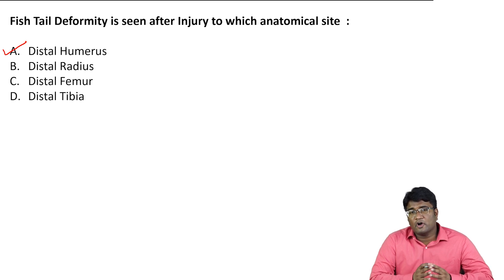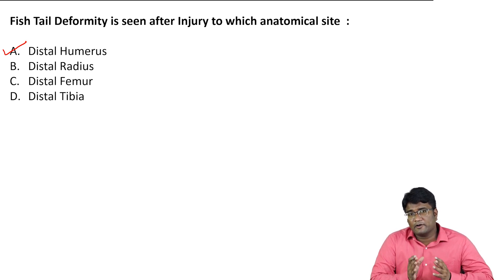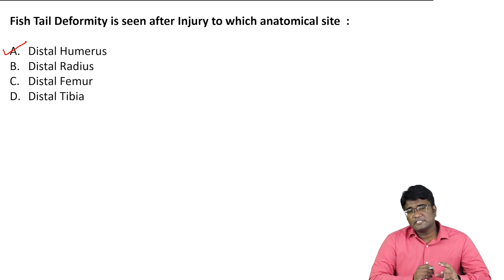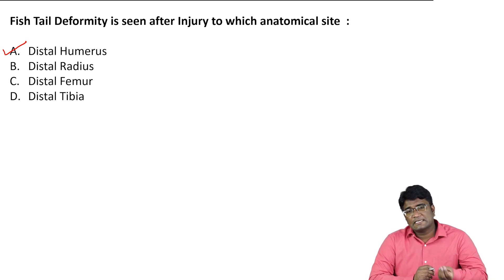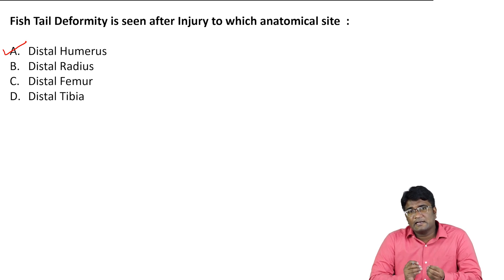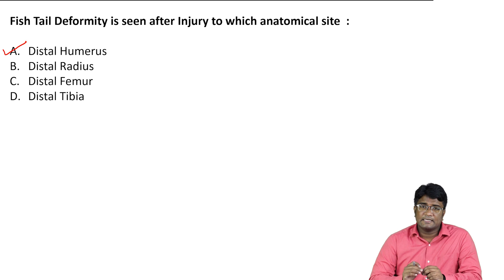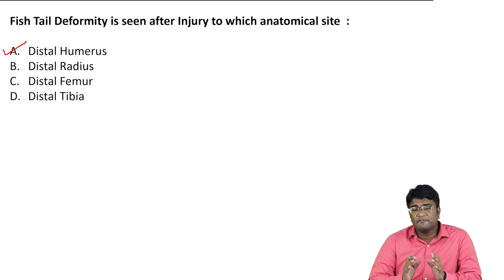These vascular injuries can cause resorption of the lateral trochlear ossification of the humerus. Fish tail deformity produces a central defect involving the lateral trochlear ossification, and this is called fish tail deformity.